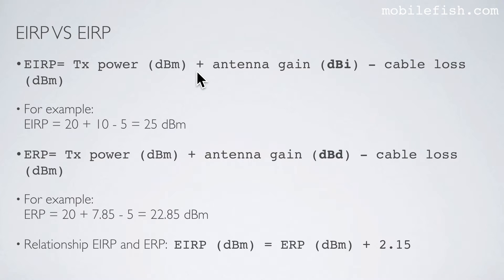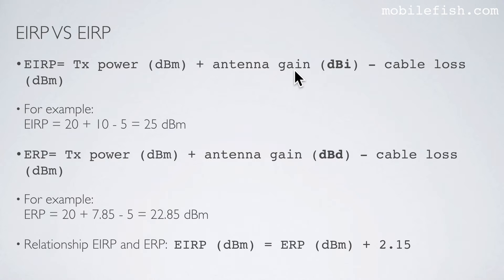This is the equation to calculate the EIRP value, and this is the equation to calculate the ERP value. Both equations are the same, with the exception of the antenna gains. The antenna gain for EIRP must be expressed in the unit dBi, and the antenna gain for ERP must be expressed in the unit dBd.